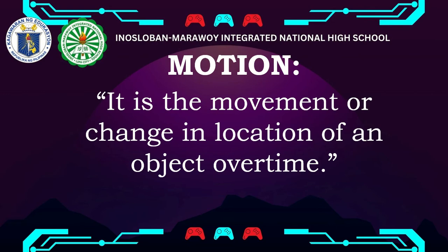Before we go on, let us first define the word 'motion,' since this is the concept we will talk about today. Motion is the movement or the change in location of an object over time. That's the definition of motion. My question is: how can we say that an object is in motion?